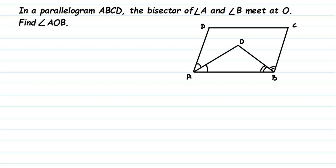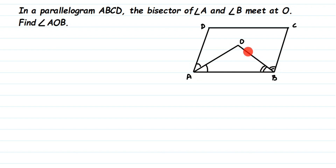Here's a question on parallelogram. In a parallelogram ABCD, the bisector of angle A and angle B meets at O. Find angle AOB. This is a parallelogram ABCD, and they have given the bisector of angle A. We have to find out angle AOB, that is angle O inside.